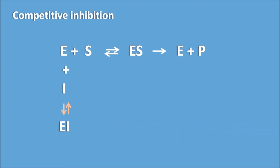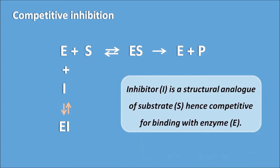In competitive inhibition, the enzyme plus substrate forms a complex and finally a product. The inhibitor acts on the enzyme, forming an enzyme-inhibitor complex, thereby inhibiting enzyme activity. The inhibitor is a structural analog of the substrate, hence it is competitive for binding with the enzyme — that is why it is called competitive inhibition.